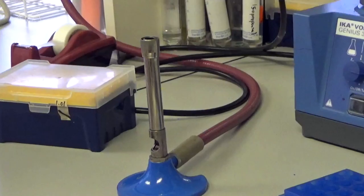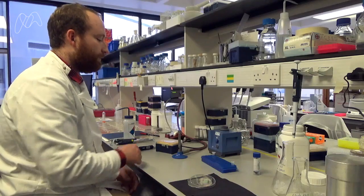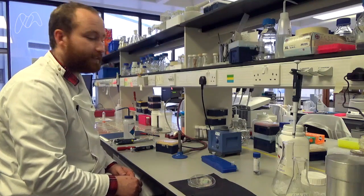So the first thing we've got to do is light the Bunsen burner. The reason we do this is to keep the air around it sterile and prevent it from contaminating the sample.